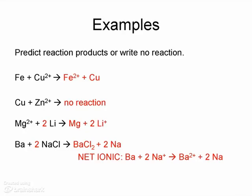Now let's look at barium reacting with NaCl. Barium is above sodium in the activity table. So barium will react with sodium ions to make barium chloride and sodium metal.